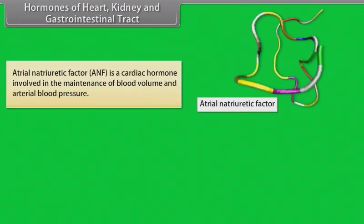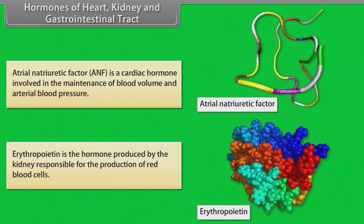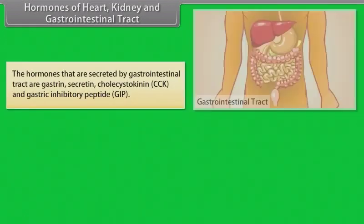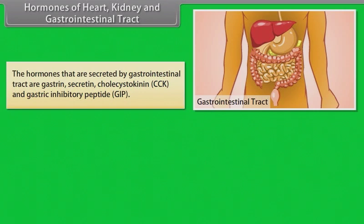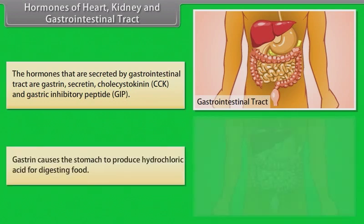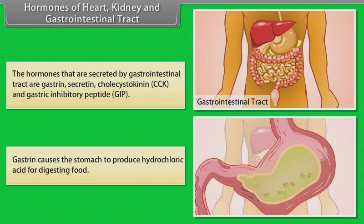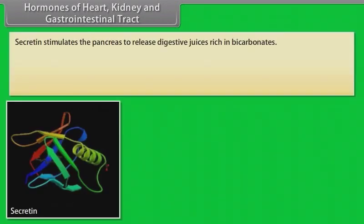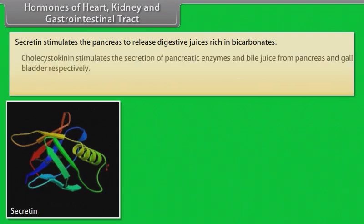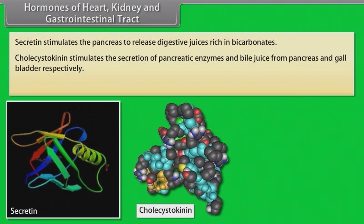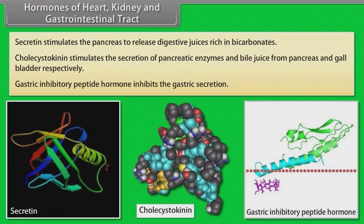Atrial natriuretic factor (ANF) is a cardiac hormone involved in the maintenance of blood volume and arterial blood pressure. Erythropoietin is the hormone produced by the kidney and is responsible for the production of red blood cells. The hormones secreted by the gastrointestinal tract are gastrin, secretin, cholecystokinin (CCK), and gastric inhibitory peptide (GIP). Gastrin causes the stomach to produce hydrochloric acid for digesting food. Secretin stimulates the pancreas to release digestive juices rich in bicarbonates. Cholecystokinin stimulates the secretion of pancreatic enzymes and bile juice from the pancreas and gallbladder respectively. Gastric inhibitory peptide inhibits gastric secretion.